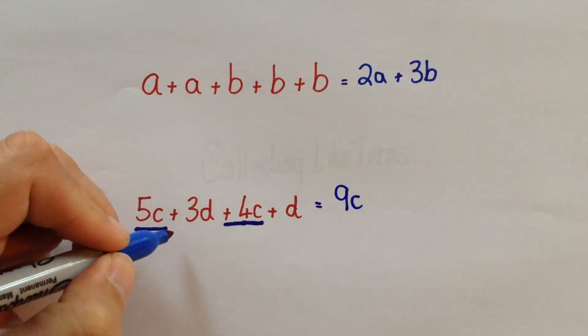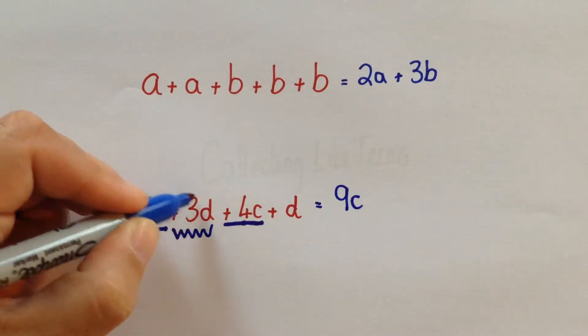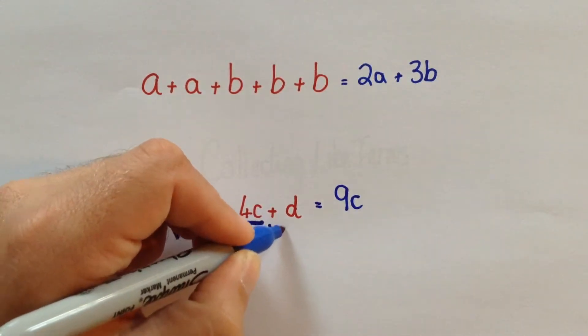We then look at the other letter. So here, we've got plus 3D. So that's like saying positive 3. We then need to add on D.